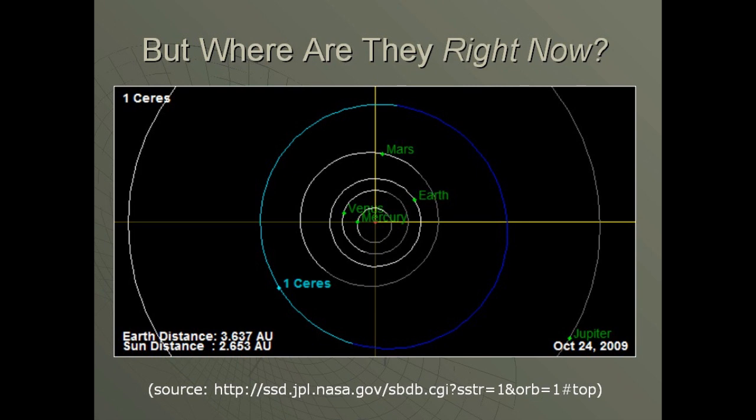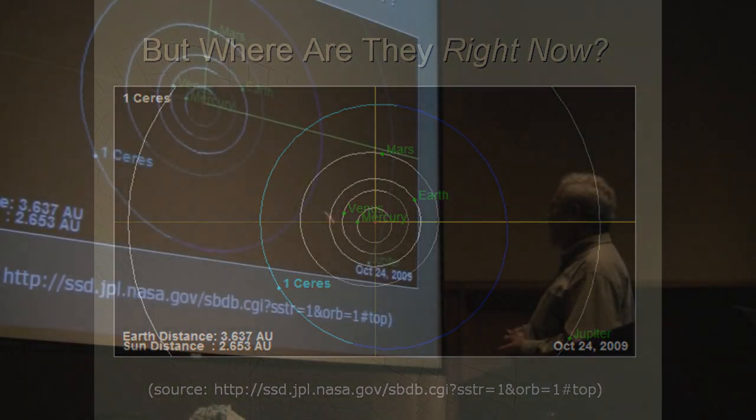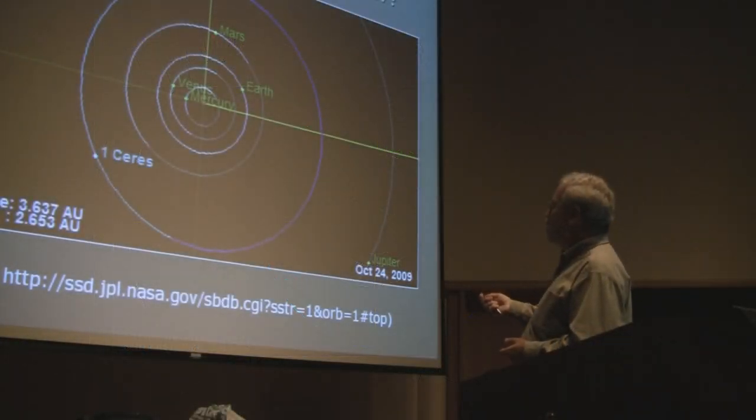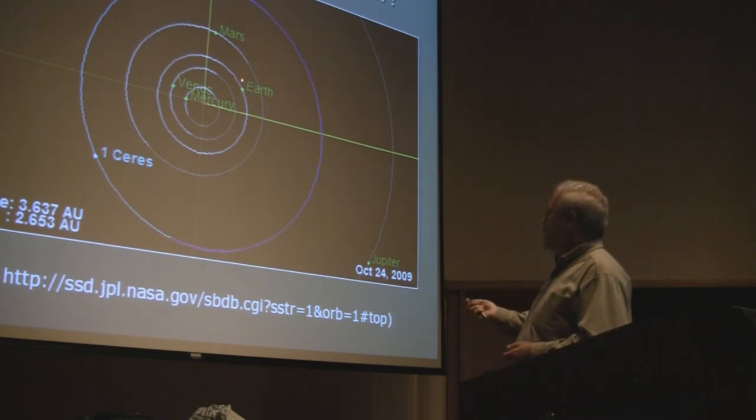So the sunrise and sunset line on Earth would be a tangent like this. And from that, you can tell that Jupiter's in the evening sky right now, which it is. And Mars we see more in the morning sky. Here in about January, we're going to catch up with Mars, and it's going to be pretty bright.